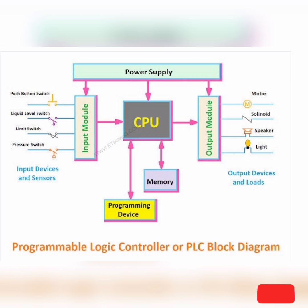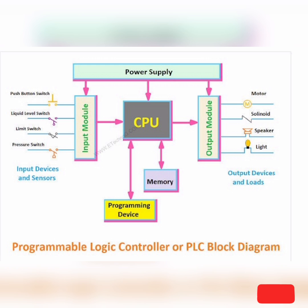Another important point is that the microprocessor can work with only digital signals, but all input devices or sensors may not produce a digital signal. In fact, most sensors create an analog signal. So another important function of the input module is to convert the analog signal into a digital signal. The microprocessor or CPU can deliver a very small amount of current — a few milliamps at 5 volts DC — so we cannot drive loads directly with the microprocessor. The output module solves this problem.